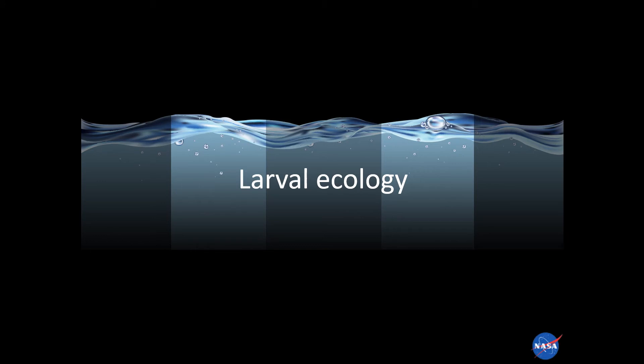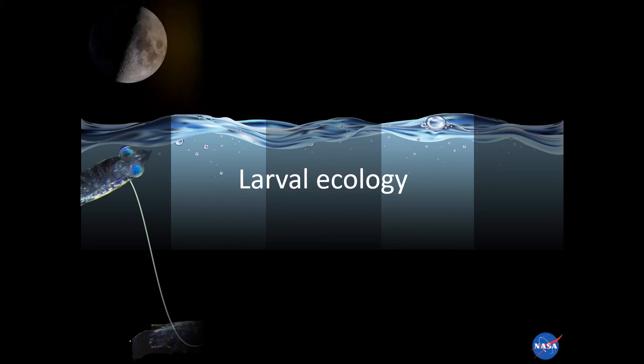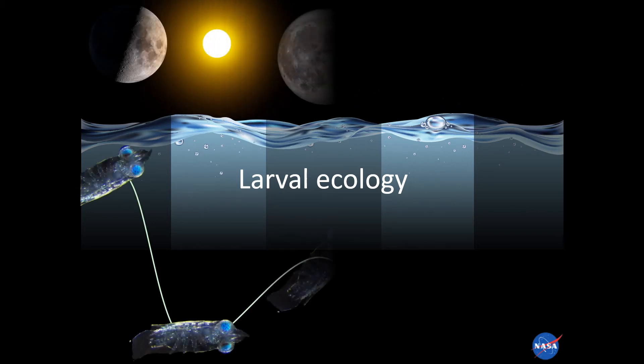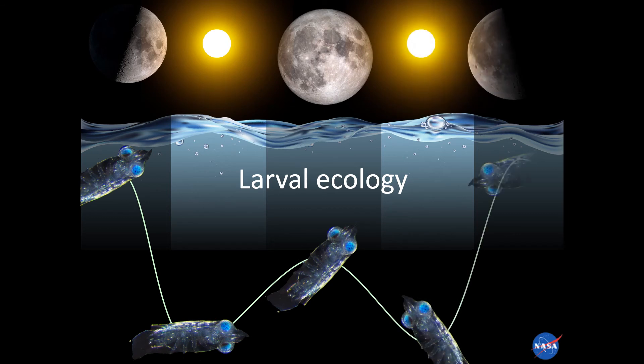Like many zooplankton, mantis shrimp larvae vertically migrate in the water column so that they come to the surface at night to feed and hide at darker depths during the day. It is unlikely that the ISR evolved for detecting moonlight since the brightness and position of the moon is highly variable and larvae don't actually come near the surface when the moon is full.